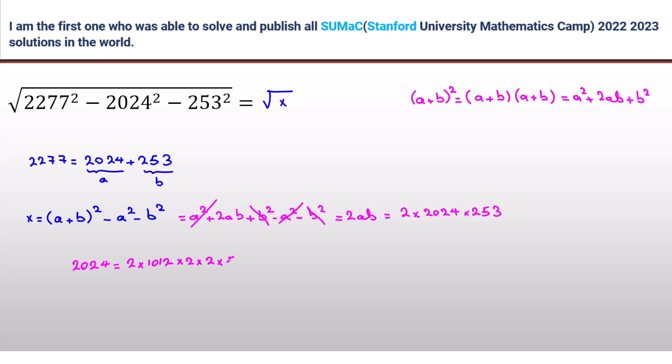Or you can say, okay, 2 times, this is 2 times 506. And again, 506 is multiple of 2 times 253. So it is 2 cubed times 253. If you plug in these for 2024 here, then we have x is equal to 2 times 2024 is 2 cubed times 253 times this number times 253.